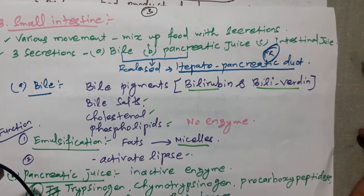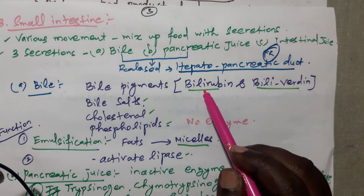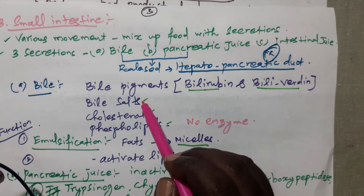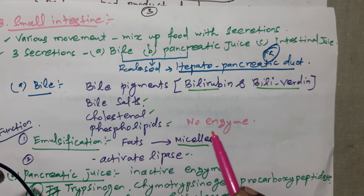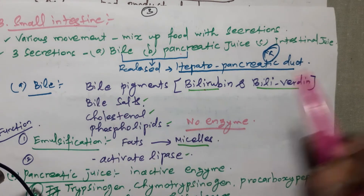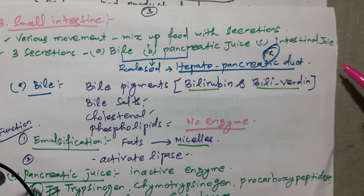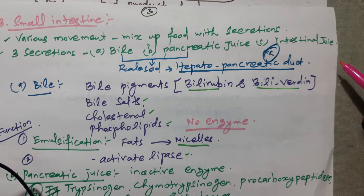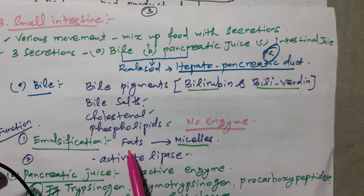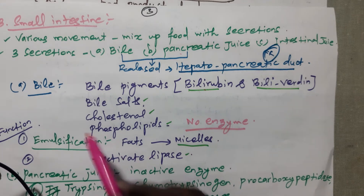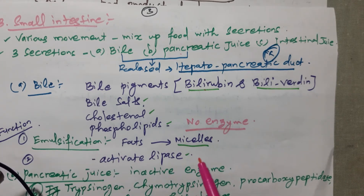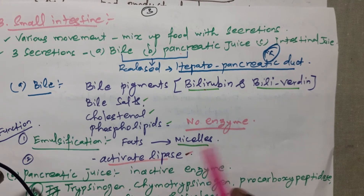The bile contains bile compounds: one is bilirubin, another is biliverdin, then bile salts, cholesterol, and phospholipids. Note that no enzyme is present in the bile. The use of bile is: first, emulsification — fat molecules are complex molecules that are broken down into micelles, which is called emulsification. Another use of bile is to activate lipases, which act on fat.